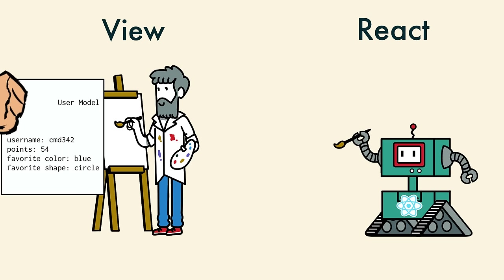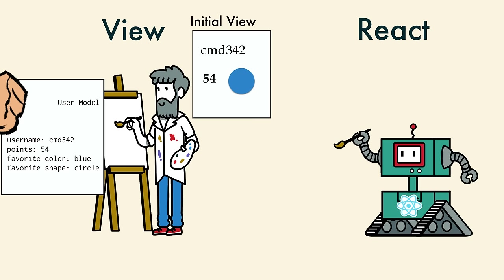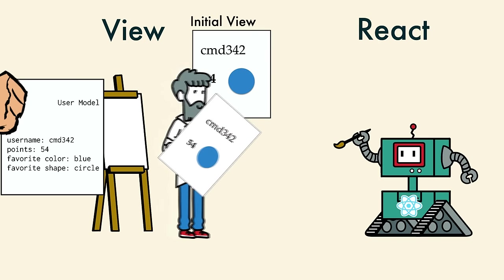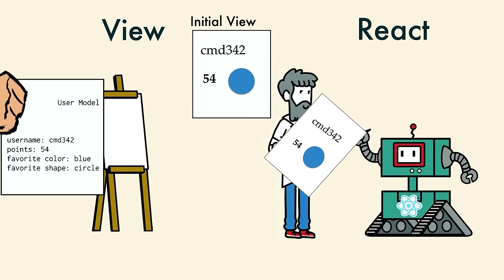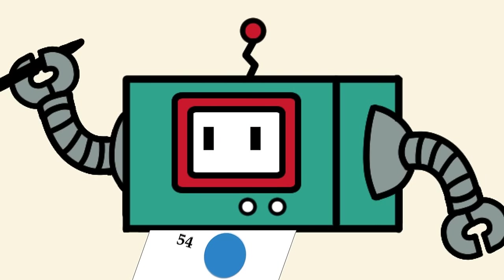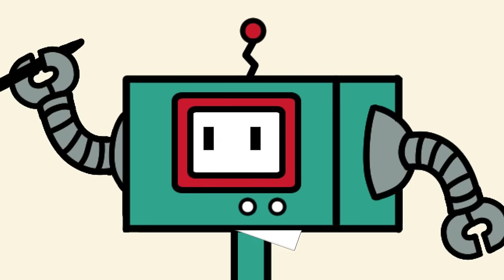The model would hand the view a complete piece of data. The view knew how to render this — username, points, and colored shape. He would draw a quick but accurate sketch, then bring it to React, who would scan it. React had very accurate and fast memory banks.